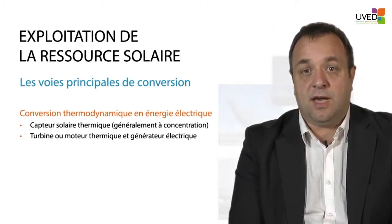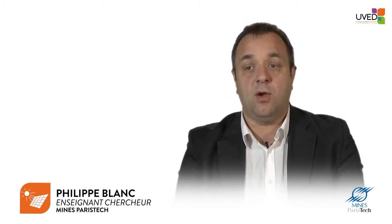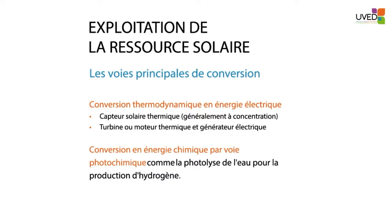An example of this thermodynamic concentration system is shown in the pictures on the right-hand side — a dish system, a solar tower, and a Fresnel system. The key advantage of this conversion pathway is that between the thermal conversion and the electrical power conversion, it is possible to store the energy in the form of thermal energy. With this system, solar energy can be converted and stored before it becomes electrical power. Another option is photochemical conversion, where water fertilizers release hydrogen, which can be used as an energy carrier, for instance in fuel cells.